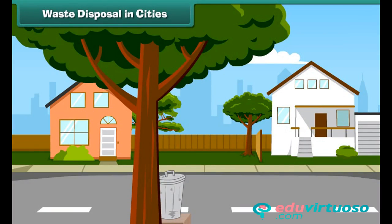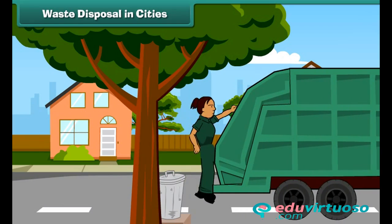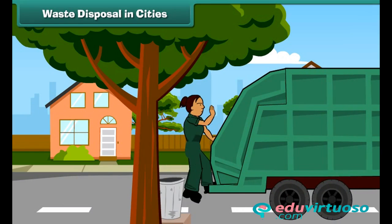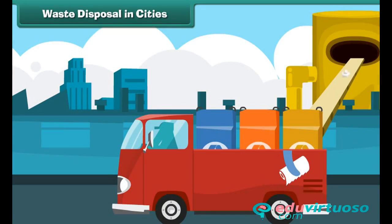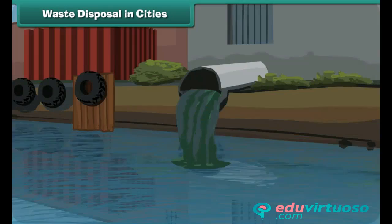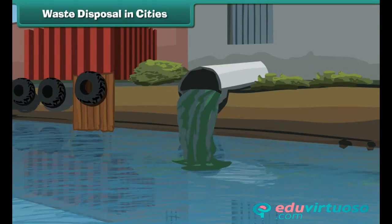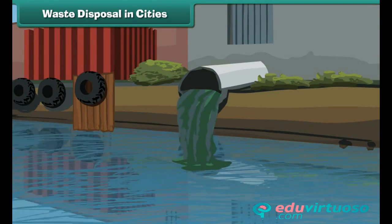Waste disposal in cities: The waste from our homes is first collected and treated in municipal sewage treatment plants, and only then disposed of into water bodies like rivers. Waste treatment ensures that rivers are not polluted.